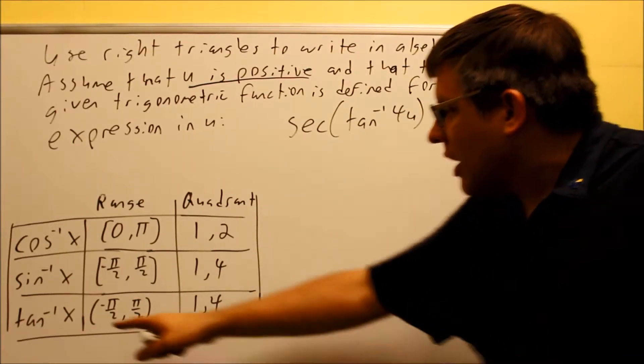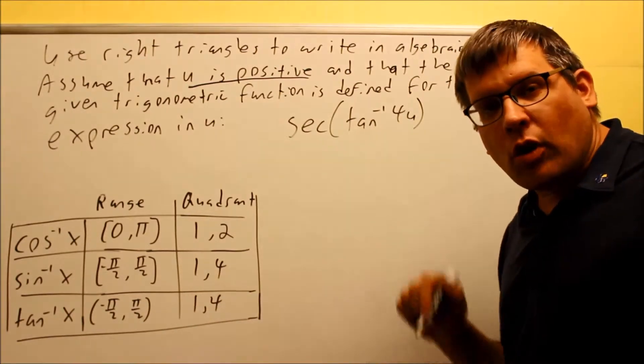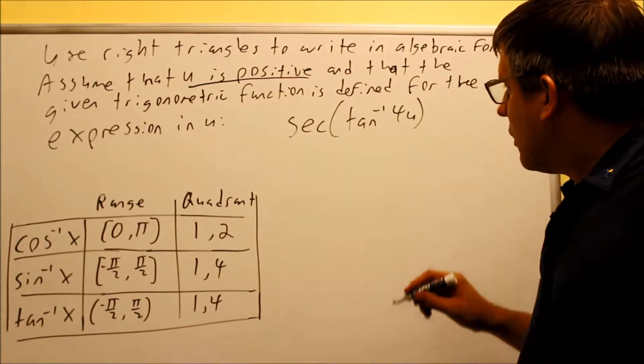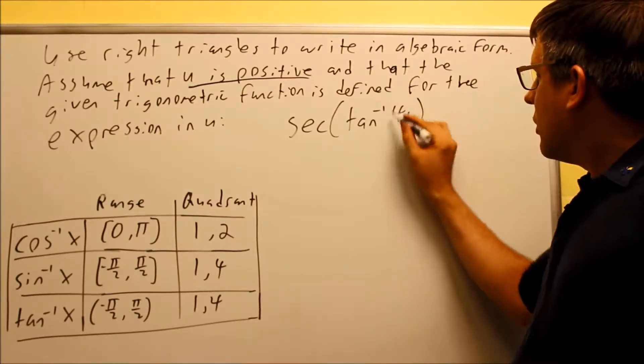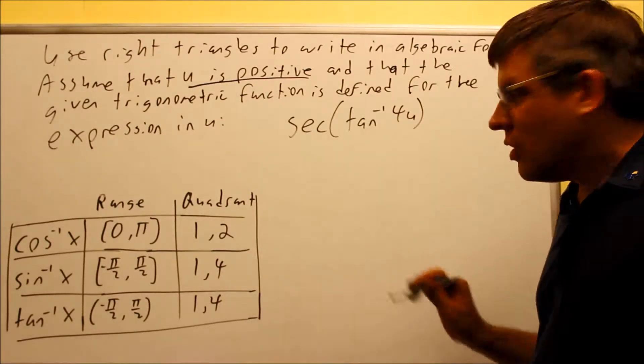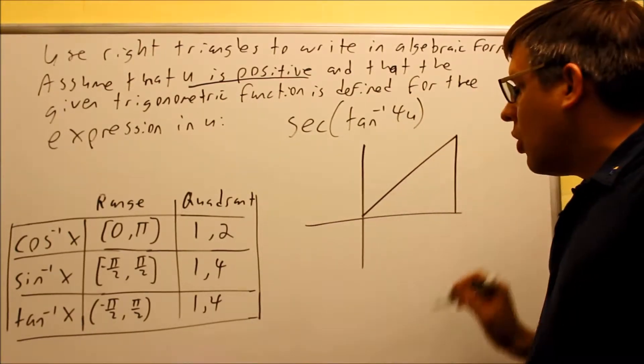So we have an inverse tangent that's here that says that you can draw the triangle in either quadrant number one or quadrant number four. Now, it says, right here, the important thing is that this part has to be positive.